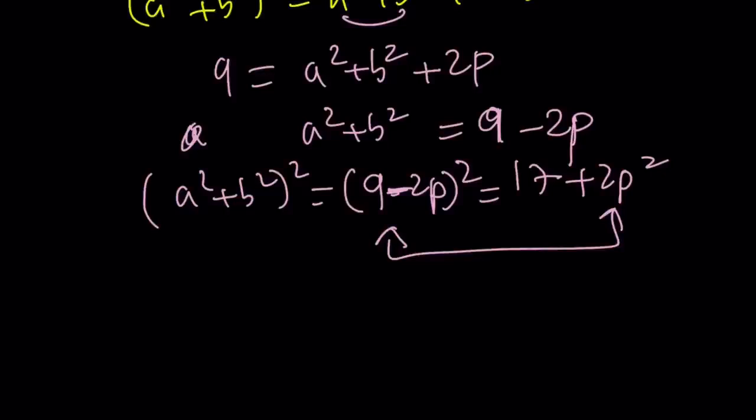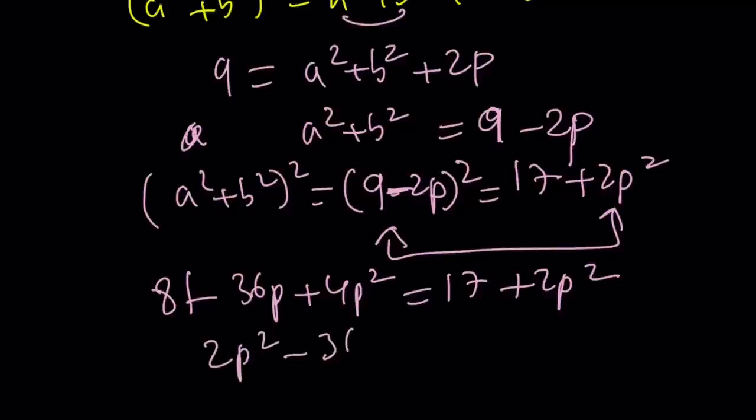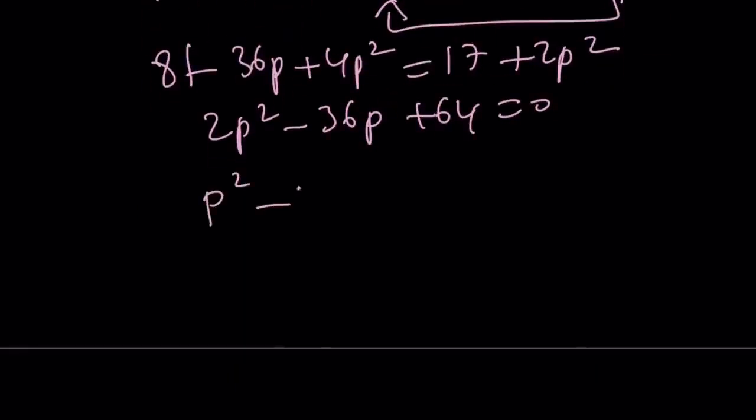Let's go ahead and expand it and solve it. And, we're going to get the value of p. That's going to be 81 minus 36p plus 4p squared equals 17 plus 2p squared. And, from here, you're going to get the p values. Let's go ahead and evaluate it real quick. 2p squared minus 36p. 81 minus 17 is, again, 64. We got that number again. But, dividing by 2 gives us p squared minus 18p plus 32 is equal to 0. And, this is factorable into p minus 2 and p minus 16, right? Easy.